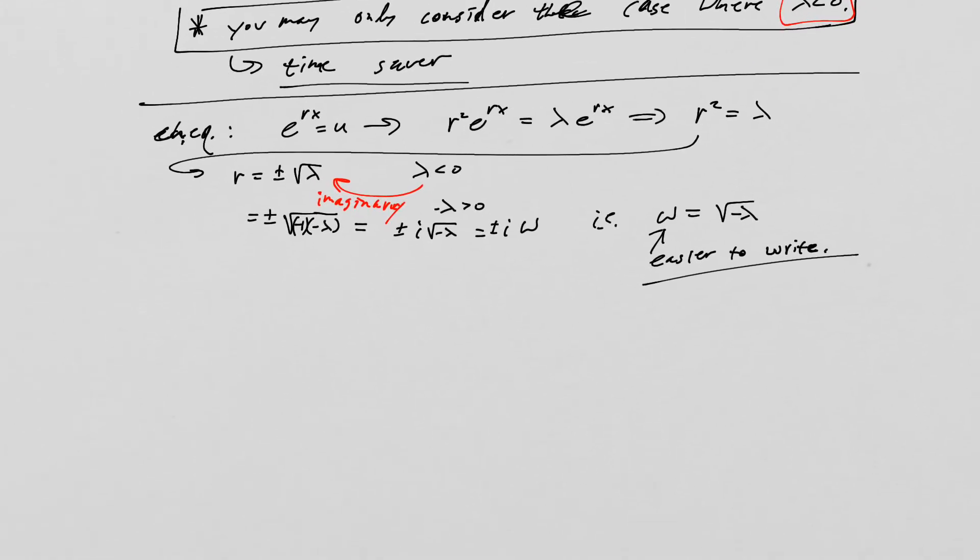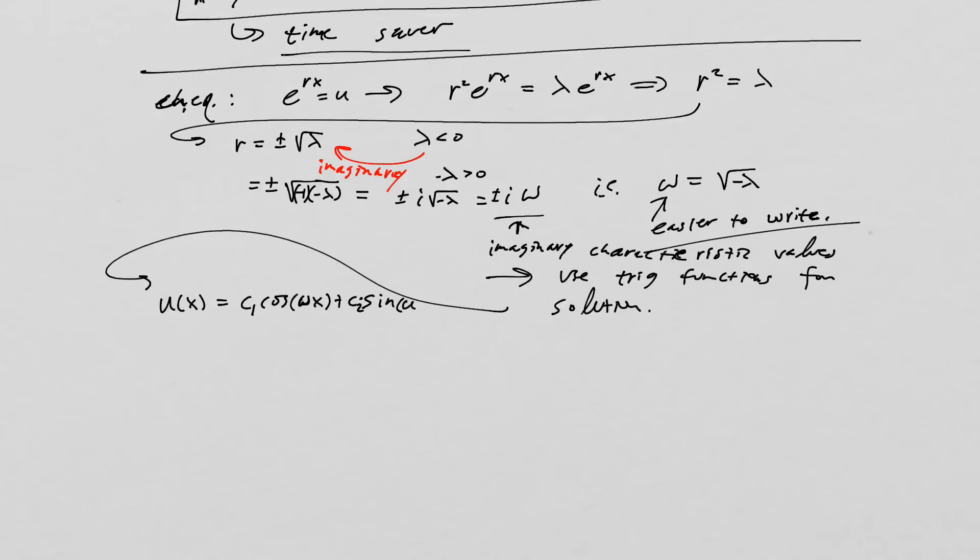So with this, now we want to see if we can figure out how to get further with this one. So we have imaginary characteristic values. And that means we can use trigonometric trig functions for the solution. What we're going to do is say u of x is equal to c1 cosine omega x plus c2 sine omega x.